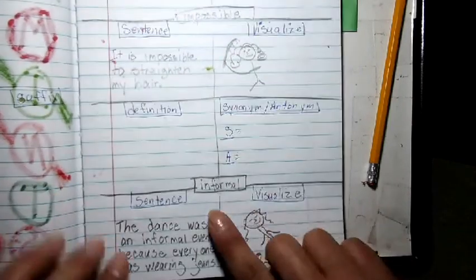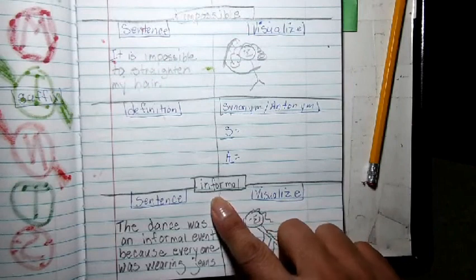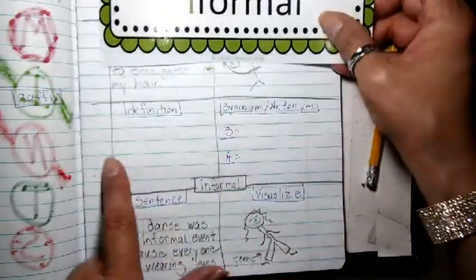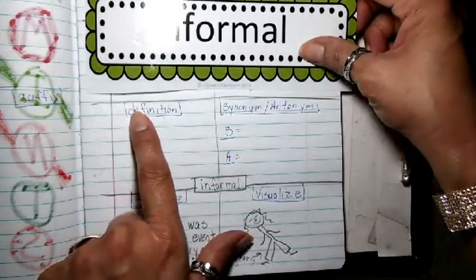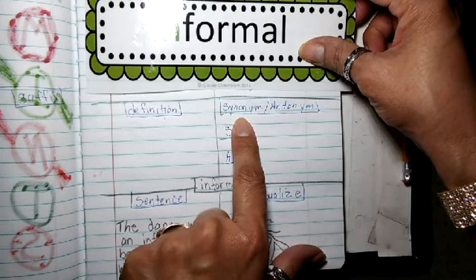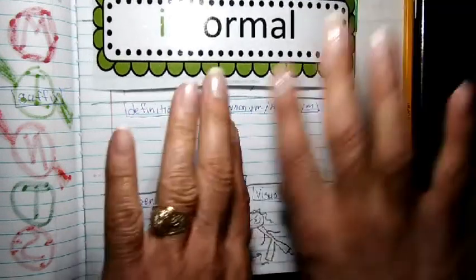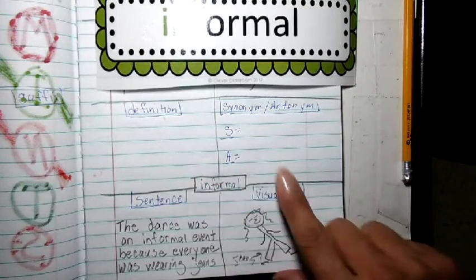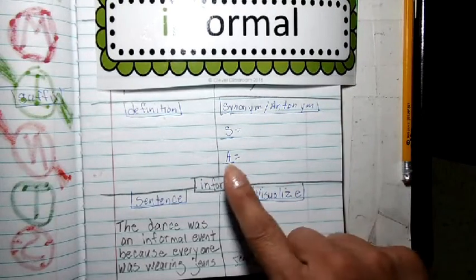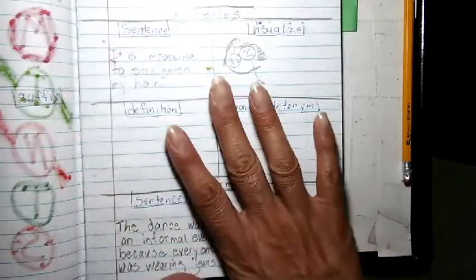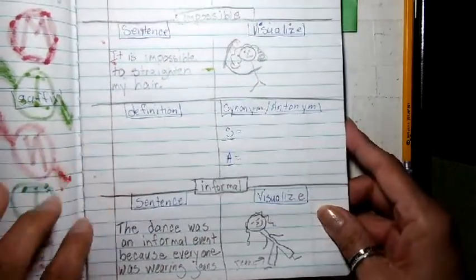My next word is informal. That's informal. I'm going to make a definition, synonym, antonym. Again, synonym means the same. Antonym means opposite. I'm going to make a sentence. Then I'm going to visualize with the word informal. That's what I'm going to put on the right side of my graphic organizer.